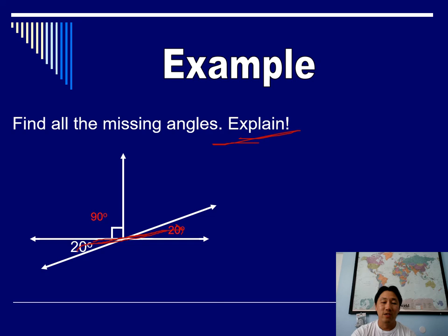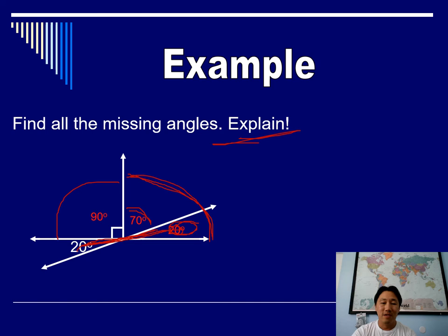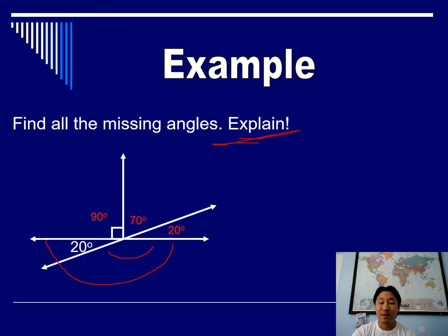The next angle to find: we know one half is 90 degrees, and this part is already 20, so the remaining piece is 70 degrees — those two together make 90, which means they're complementary. Then there's one more angle to find. That missing angle forms a linear pair, so it adds up to 180. Since the known angle is 20, the missing one must be 160 degrees.